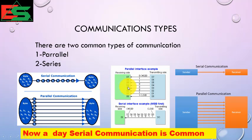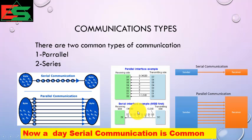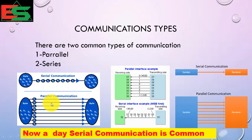In parallel communication D0 to D7 are 8 bits communicating by 8 wires. But in case of serial communication only one wire is enough to communicate. Nowadays serial communication is very common because in the old days parallel communication was common but it is very costly. If one wire breaks, you cannot communicate between the two devices. So nowadays serial communication is very common in the industries.